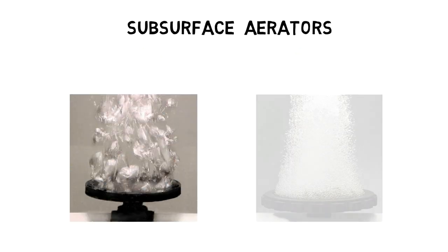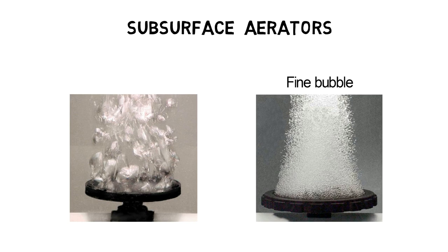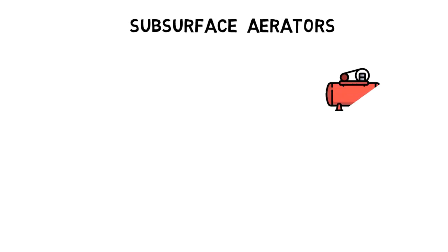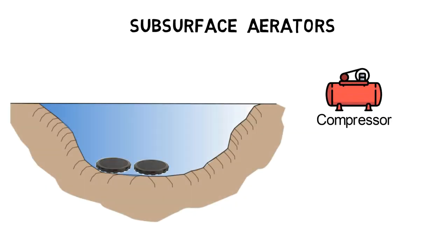Examples of subsurface aeration equipment are fine and coarse bubble diffusers. A compressor onshore pumps air through a hose which is connected to underwater bubble diffuser units. The bubble diffuser units normally have a plastic or stainless steel corpus and perforated membranes on the outside. Air which is pumped into the diffusers is released through the membranes into the water.